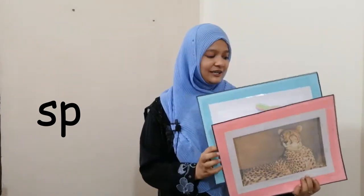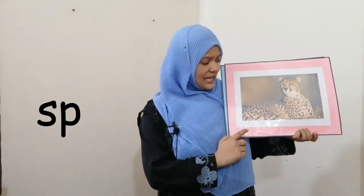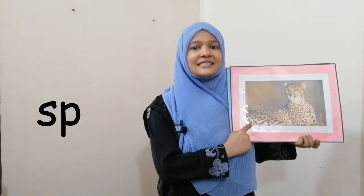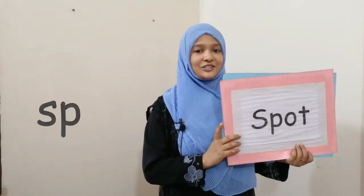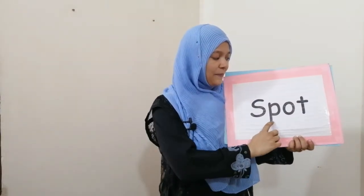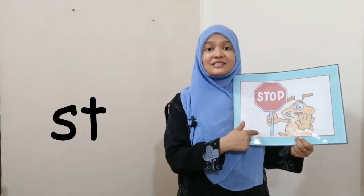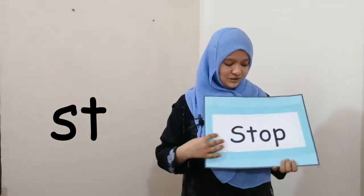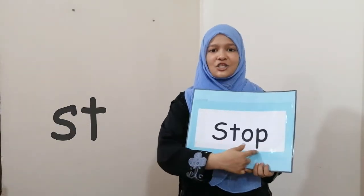Tell with me: spoon, spoon. Now look at another picture — that is a tiger, it has spots on its body: spot, spot. Now read out the words: spoon, spot. What is the mouse holding? The placard of 'stop'. Now read out the word: stop.